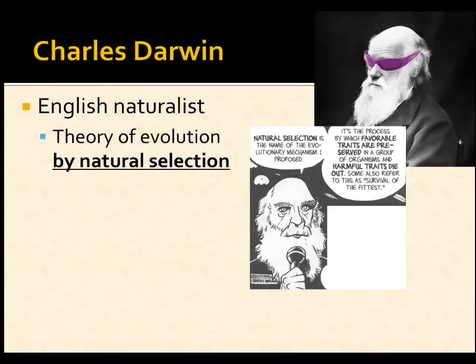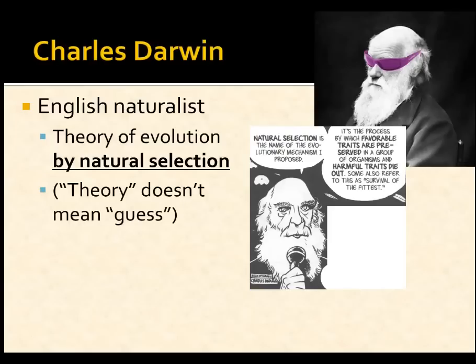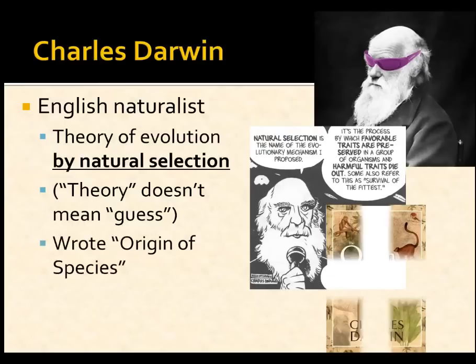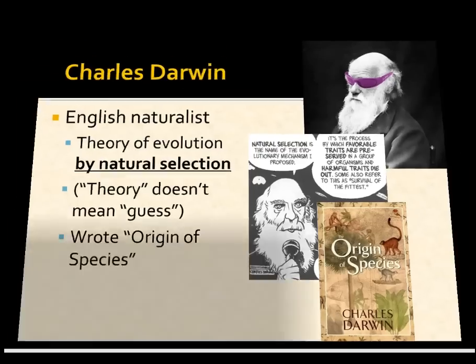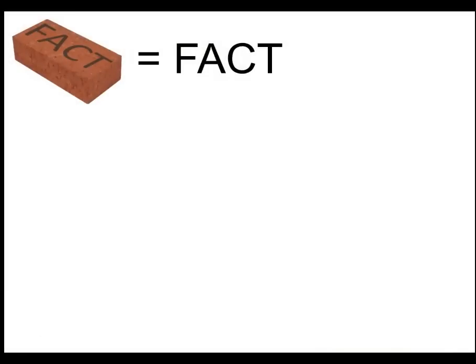Everyone had known for a long time that creatures change. The question was, how? When we say 'theory of evolution,' it doesn't mean guess — a theory is a very well-tested idea. He laid it all out in a famous book published in 1859 called On the Origin of Species by Means of Natural Selection, abbreviated Origin of Species.